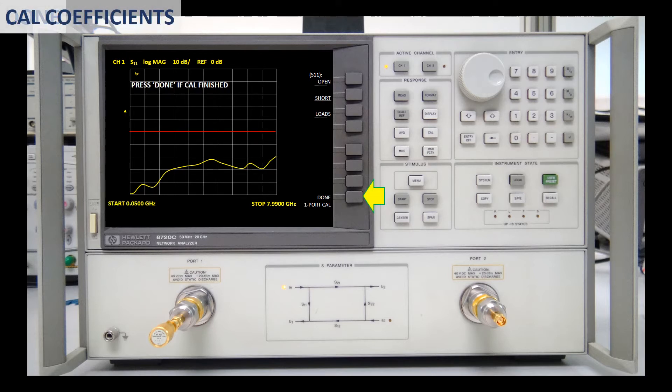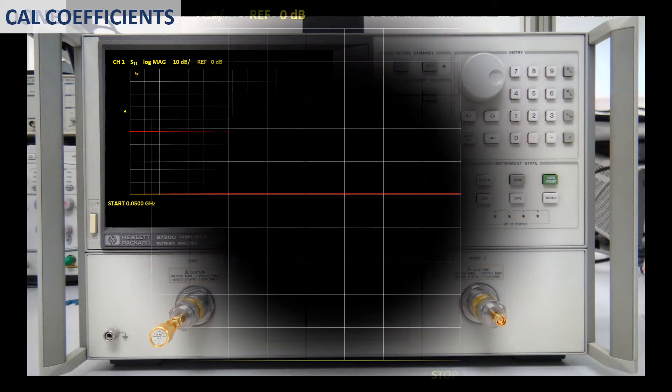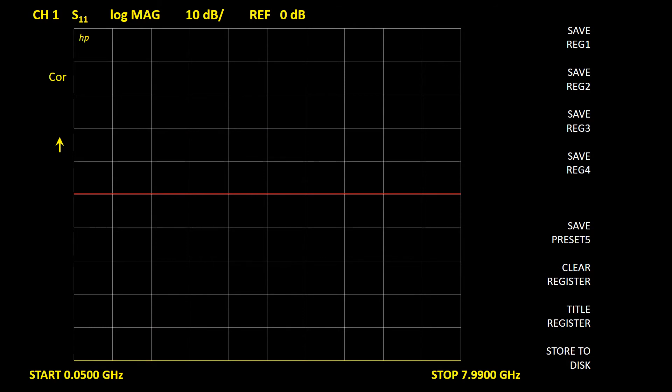Now we press Done again and the instrument starts to compute the calibration coefficients. The calibration was finished. Now the label COR is displayed at the left of the screen to indicate that we are seeing a corrected measurement.